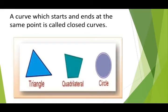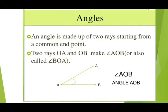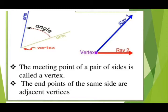Examples of closed curves are triangle, quadrilateral, and circle. An angle is made up of two rays starting from a common end point. Here O is the common point, and OA and OB are two rays that make angle AOB, also called angle BOA. The meeting point of a pair of sides is called a vertex.